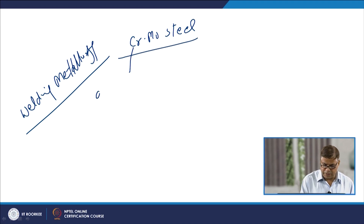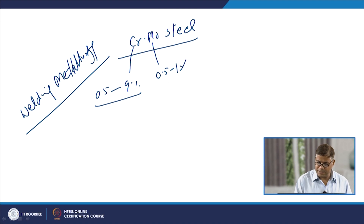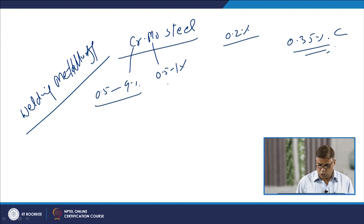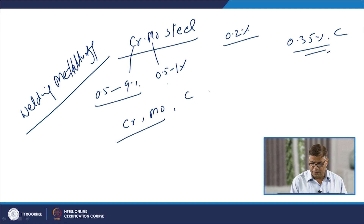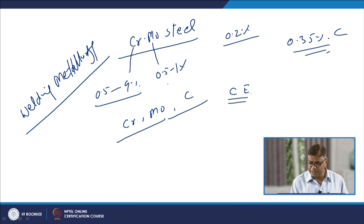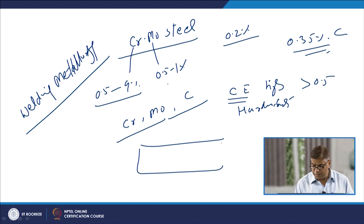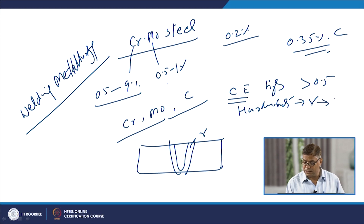Chromium in these steels can range from 0.5 to 9%, molybdenum is usually 0.5 to 1%, and carbon is generally less than 0.2%, though in some high-carbon cases it may be around 0.35%. Due to the higher weight percentages of chromium and molybdenum, the carbon equivalent of these steels is very high—greater than 0.5—giving them high hardenability. Any portion of the steel austenitized during welding will tend to form martensite.